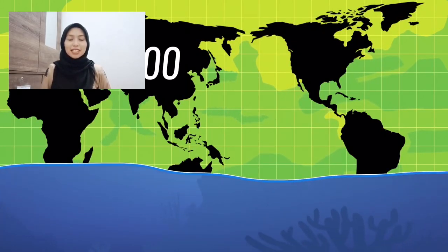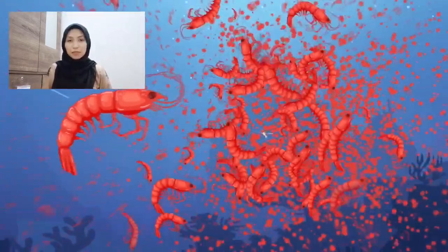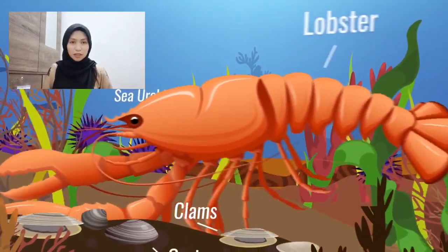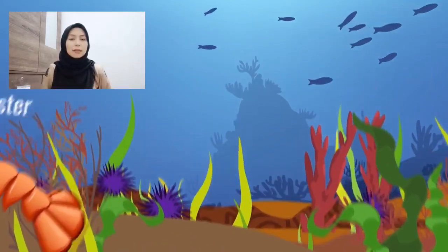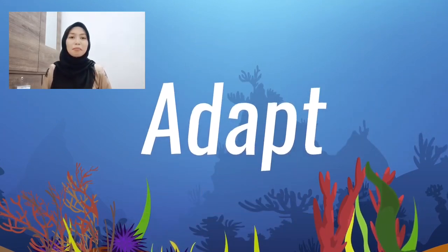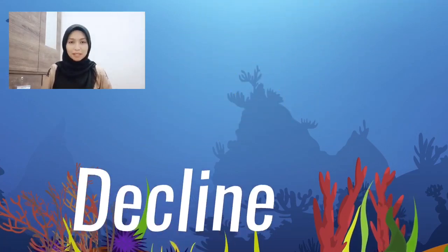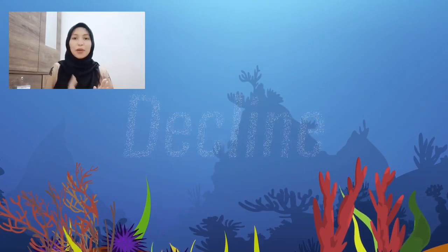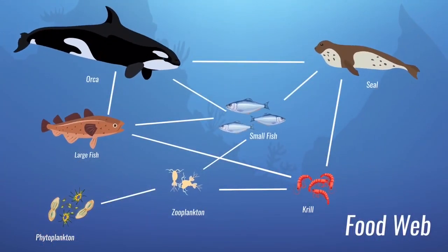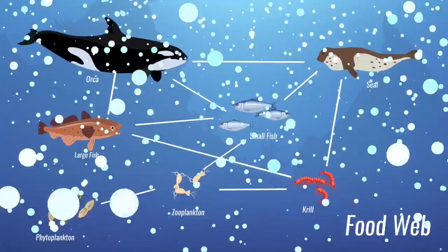The effects of ocean acidification are felt by many marine organisms. Ocean acidification can reduce carbonate ions, which are available for shell formation. It can also cause a range of biological effects. Some species may thrive in a more acidic environment, while others may adapt over time by changing their diets or moving to more favorable environments. Some populations may decline or disappear. When small species that form the basis of food webs are affected, the whole food web can be affected.